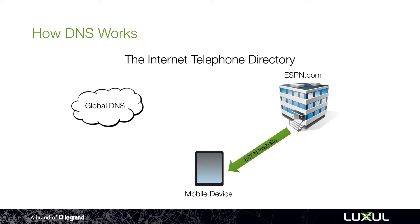The problem with this is that sometimes the DNS provided by your internet service provider isn't necessarily stable. And so a lot of times you can lose the connection to that address book. And the perception to the homeowner is they've lost internet. They may not have lost internet — they may have just lost connection to the address book, but they perceive they've lost internet because every time they try to go to a website, they can't get there.